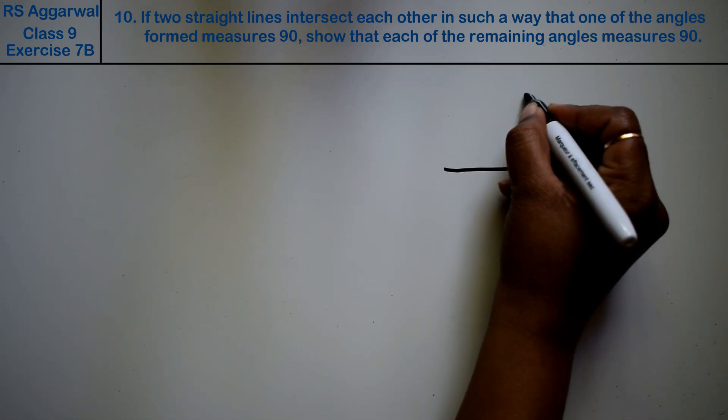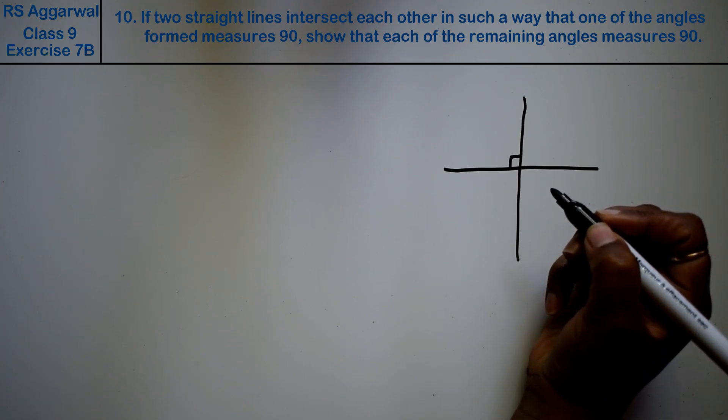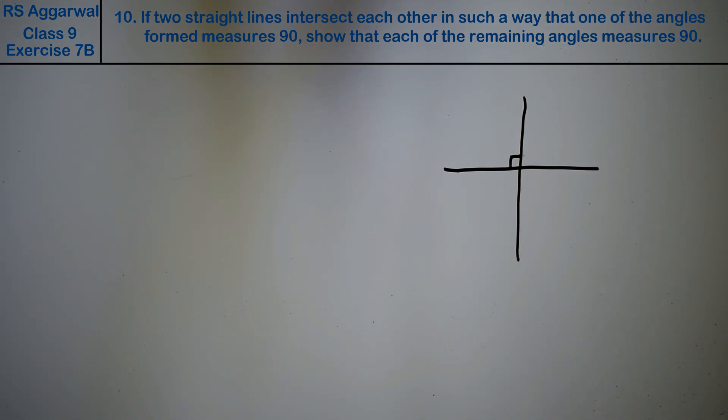The problem asks us to show that each of the angles measures 90 degrees. So we need to prove that every angle formed at the intersection is 90 degrees.